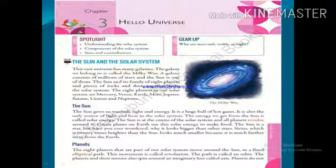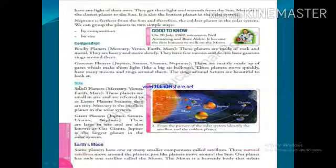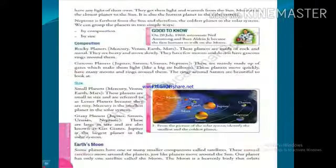Mercury is the closest planet and Neptune is the farthest planet to the sun. Now we can group planets in two simple ways: by composition, by size. By composition, planets are divided into rocky planets and gaseous planets. By size, planets are divided into small planets and giant planets.